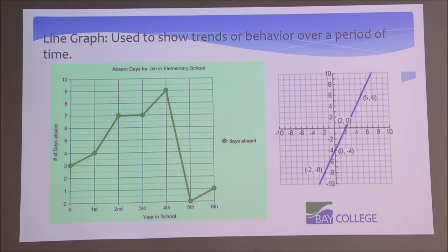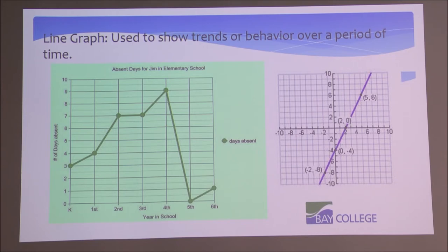Line graphs help us understand trends or behavior. In kindergarten Jim had three absences, in first grade four, and in second grade seven — already a clear upward trend. Second and third grade were the same at seven absences each, which is quite a few. Then in fourth grade Jim had nine absences. But then in fifth grade, maybe maturing a bit, he didn't miss any days of school. So we can clearly see the trend of absences for Jim throughout elementary school.